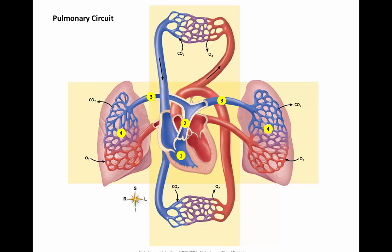Here, oxygen will diffuse out of the lungs' alveoli into the capillary, and carbon dioxide will diffuse out of the capillary into the alveoli. The flow of the now oxygenated blood continues into venules, which merge into larger veins. The right and left pulmonary veins carry the oxygenated blood and empty into the left atrium. The pulmonary circulatory route begins at the right ventricle and ends at the left atrium.